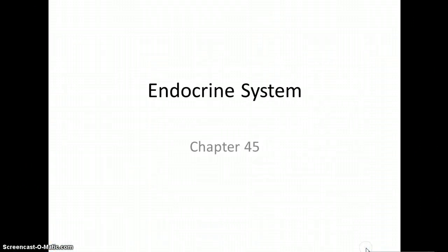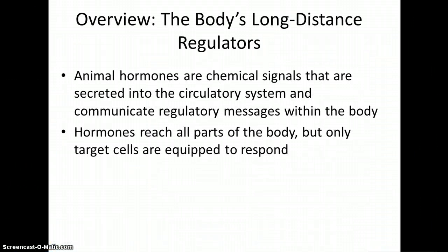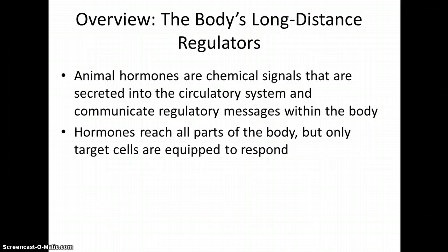Now we're going to talk about Chapter 45 of the Endocrine System. This is the body's system that makes use of your endocrine glands and hormones to carry out different functions around the body — these chemical messengers that largely make use of your circulatory system to get the message around.